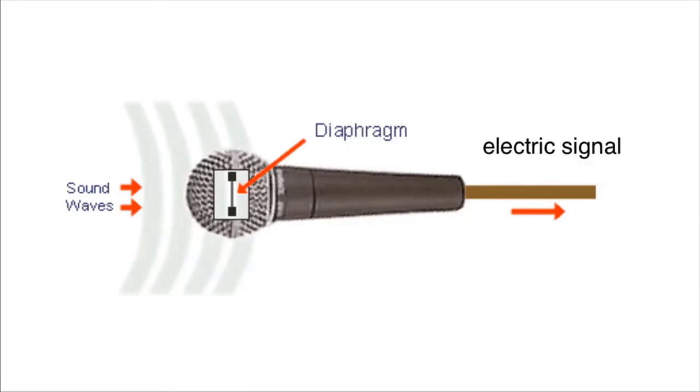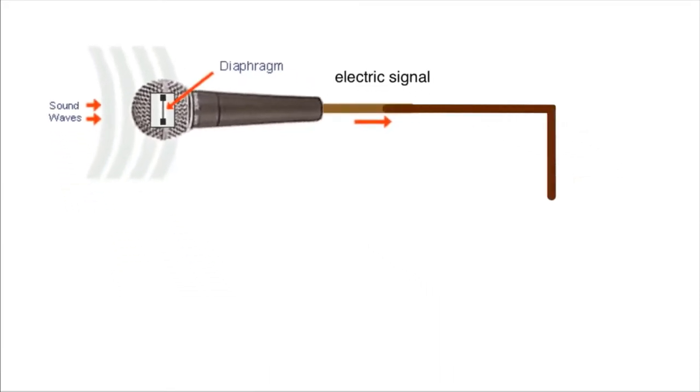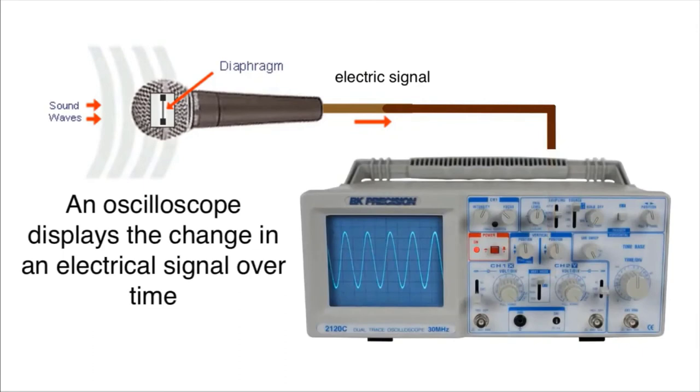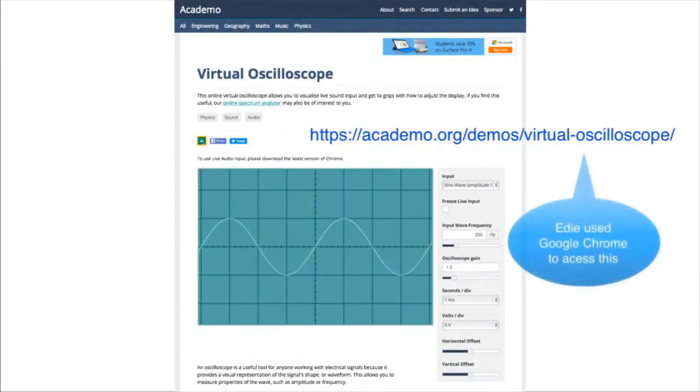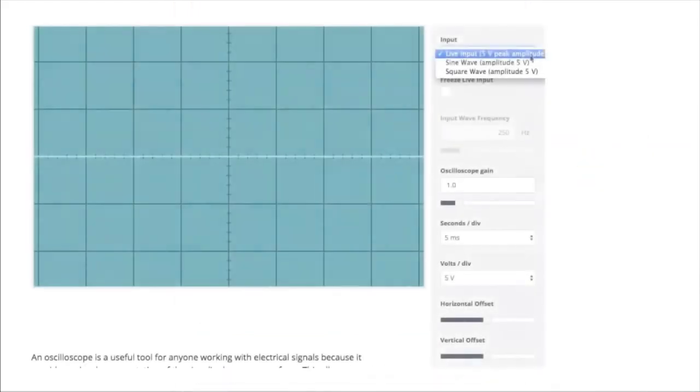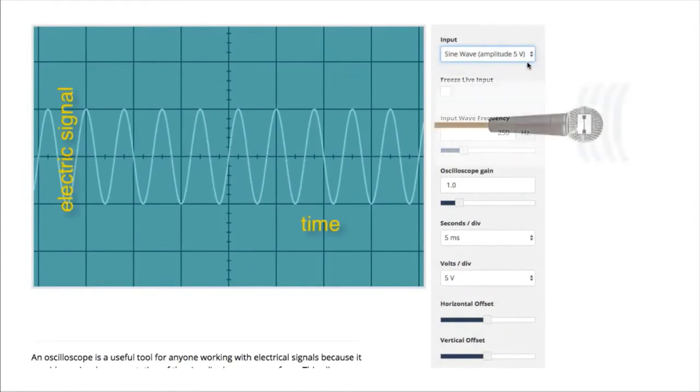We can look at the electrical signal displayed on an oscilloscope. This is an oscilloscope that you can interactively use on the web. It shows the electrical signal generated by the microphone.